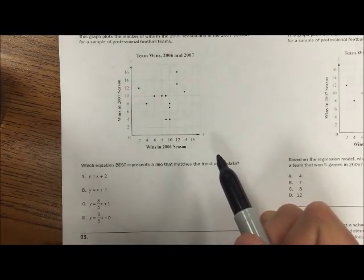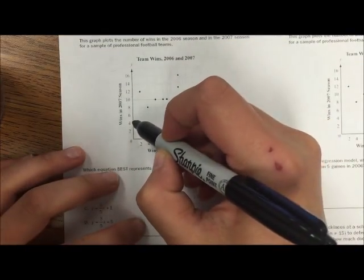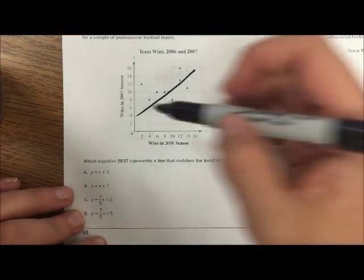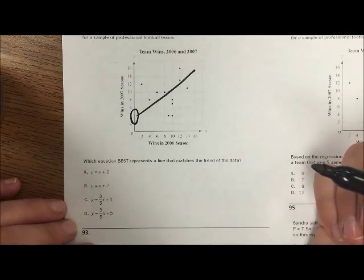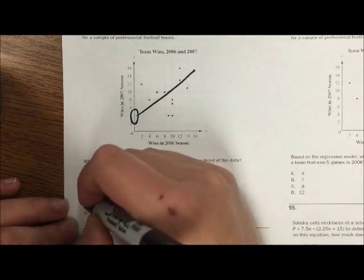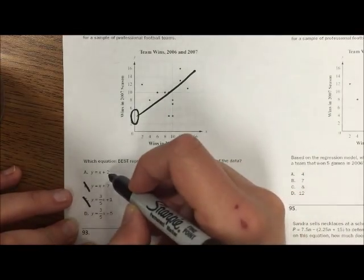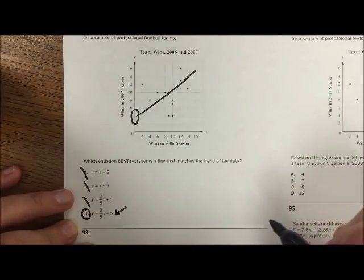So if I were to draw a line down the middle of this data, where would it go? Okay, so I would probably draw something here where both the data split. So my y-intercept is somewhere in this range, from 2 to 6. So not 7 and not 1. And I think 2 is too low. I think 5 would be the best y-intercept choice, so I would choose D.